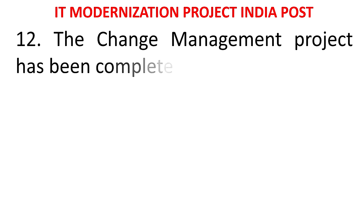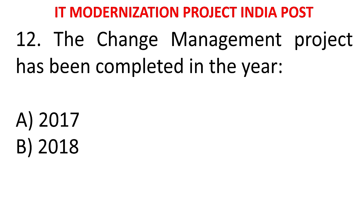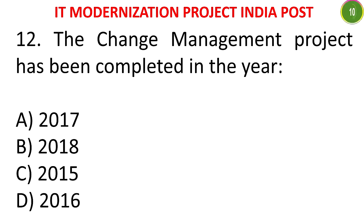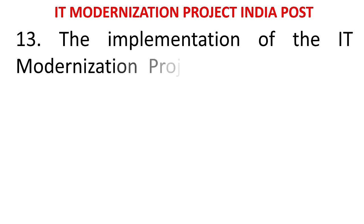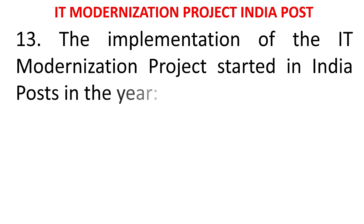MCQ 12: The change management project has been completed in the year - 2017, 2018, 2015, or 2016. The answer is 2015. The change management has been completed in the year 2015. The project started in 2012, and by 2015 the change management - that is, the training part - had been completed.